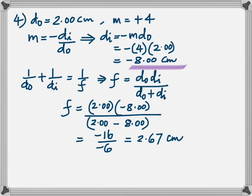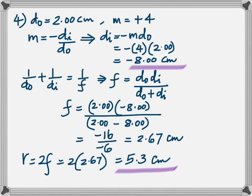Get the focal length as positive 2.67 cm. Definitely this shows that it's a concave mirror, because only a concave mirror has a positive focal length. And you have to find the radius, so you double this. 5.3 cm.